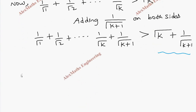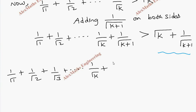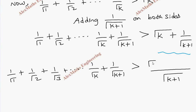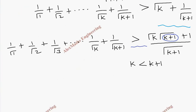On the right-hand side, we take the LCM which is √(k+1), giving √k·√(k+1) + 1 all over √(k+1). We already know k < k+1, so when we replace k+1 with k in the numerator the inequality is not affected. So we are going to replace k+1 with k.